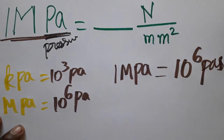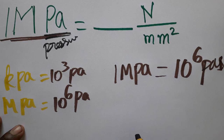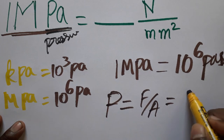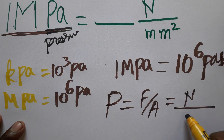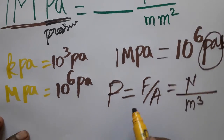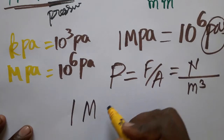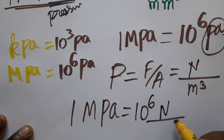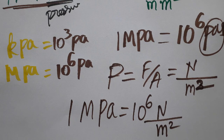Our question is: one mega pascal equals how many Newton per millimeter square. Now, one mega pascal is 10 power 6 pascals. Pressure is equal to force per unit area — force has unit Newton, area has unit meter square. So we can write one mega pascal as 10 power 6 Newton per meter square, because Pascal equals Newton per meter square.